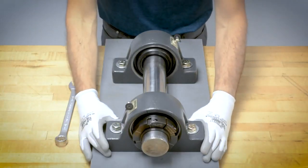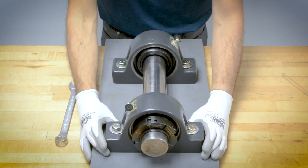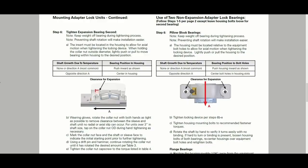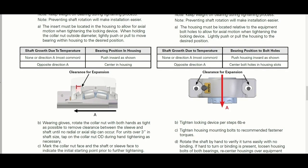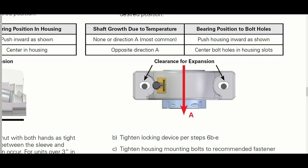In certain applications, it may be desired to use two non-expansion clamp lock adapter lock bearings. Refer to the instructions for recommendations to avoid preloading the bearing when installing two non-expansion bearings.